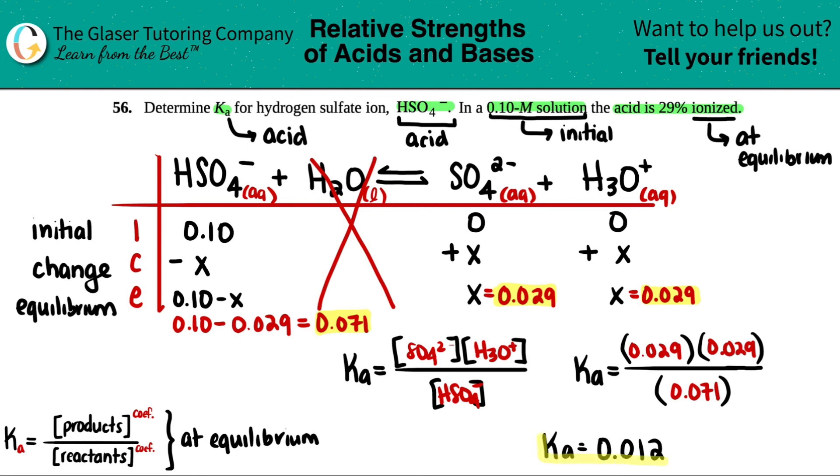Pretty close to one but not really there. That makes sense because it's only ionized 29%, so we still at equilibrium have more reactants. That's what a Ka of less than one means. As you can see here, your equilibrium value for HSO4 is still a little bigger than your product, so this all checks out.